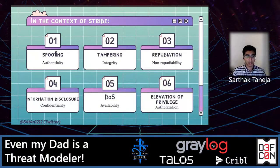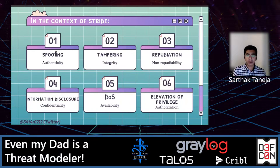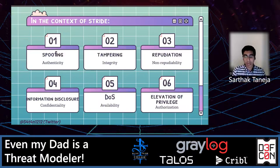Then there's denial of service — basically denying the service to valid users, for example making a web server temporarily unavailable or unusable. Then we have elevation of privilege, where an unprivileged user gains privileged access and then compromises security or destroys the entire infrastructure. I was having an interesting discussion with a friend about elevation of privilege — if you have a project in any ticket management tool and want to restrict that project even from the admin of that tool, it's nearly impossible because the admin can always grant themselves privileges to access that project. So that's an issue.